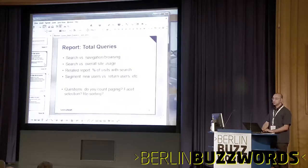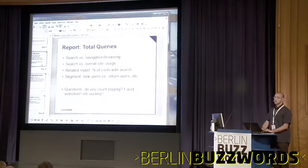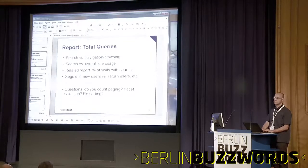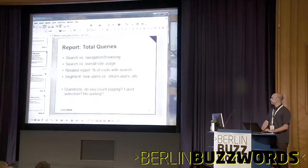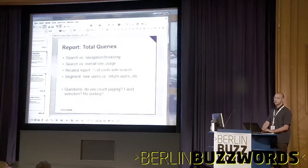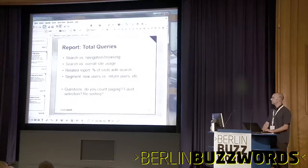A basic report is search volume compared to non-search volume on the site. If overall traffic is growing but search traffic is flat or going down, that's something to investigate — maybe the search box was moved somewhere less visible, or people have learned that search was bad the first few times and now just browse instead. There are details like whether you count resorting, facet selection, or pagination as separate search requests.